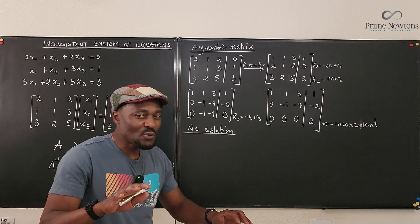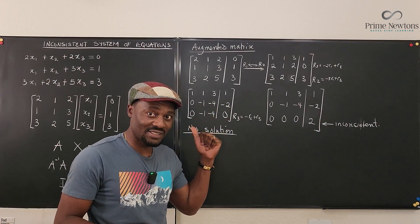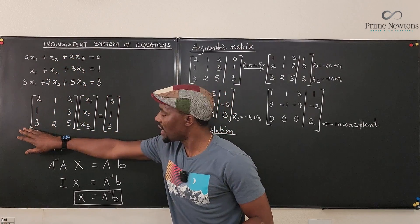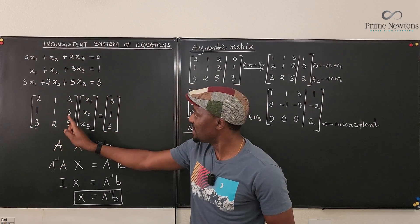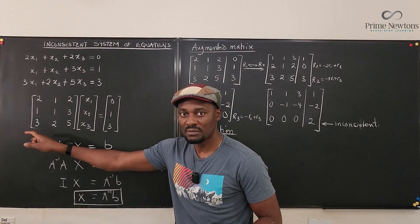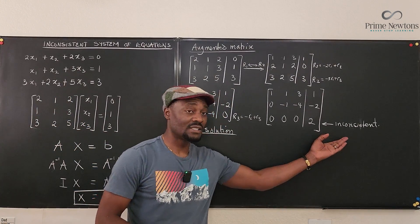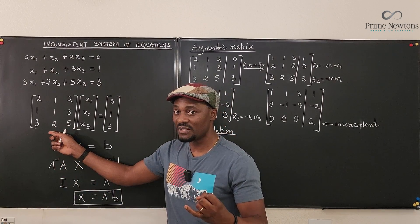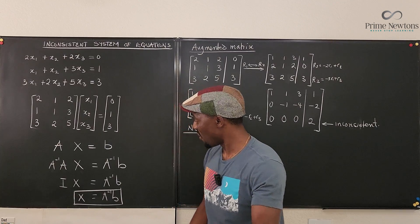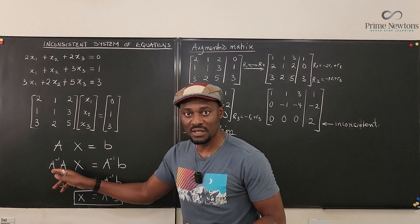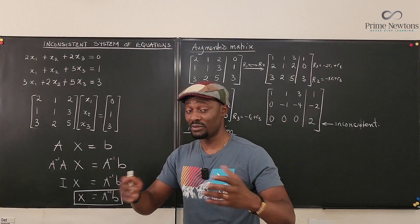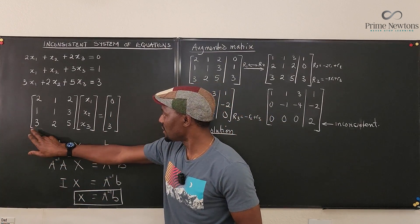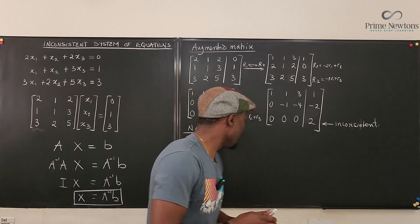That's one way. A second way to show that it is inconsistent is that the matrix formed from the coefficients does not have an inverse, because the determinant of this matrix is zero. Any time you have an inconsistent situation, the matrix has a determinant of zero, and if the determinant is zero, you cannot invert it.